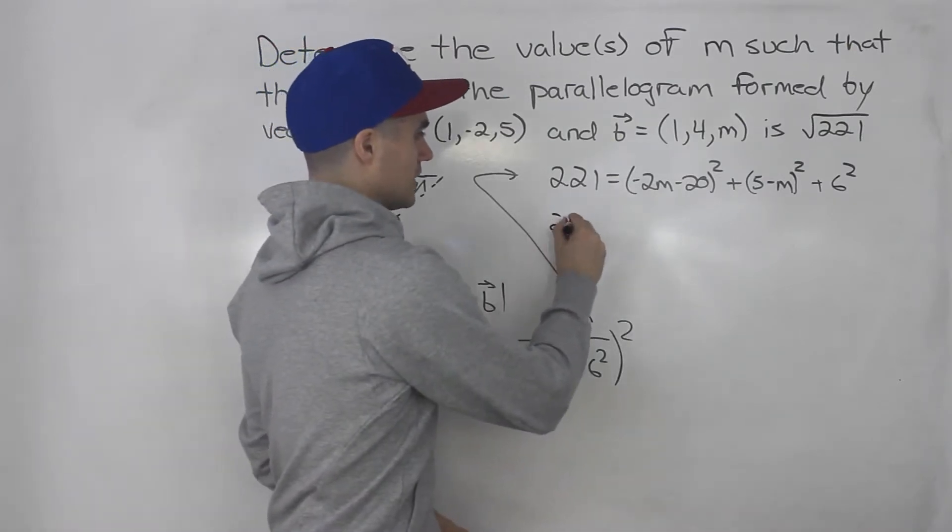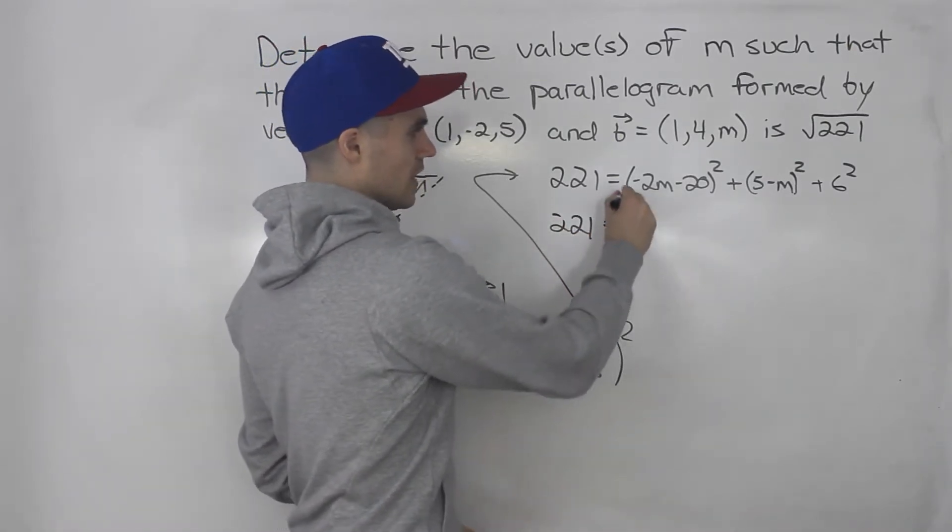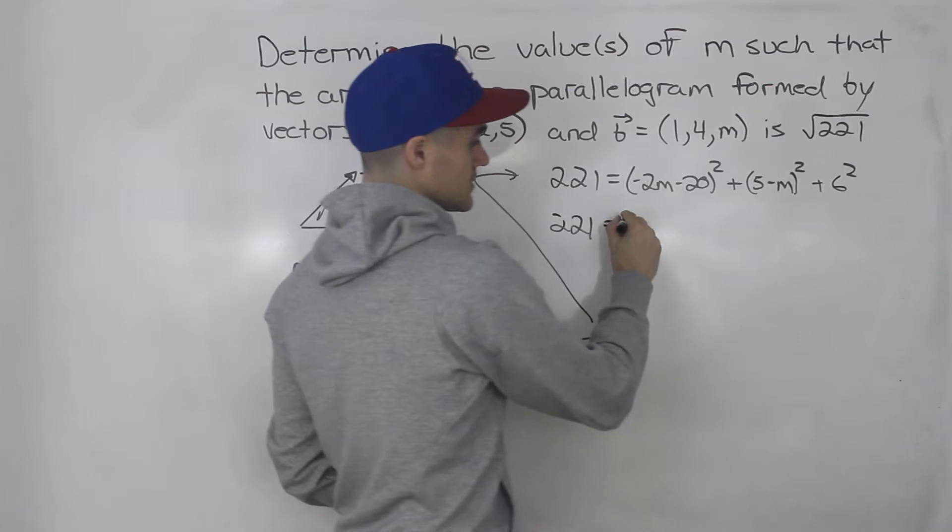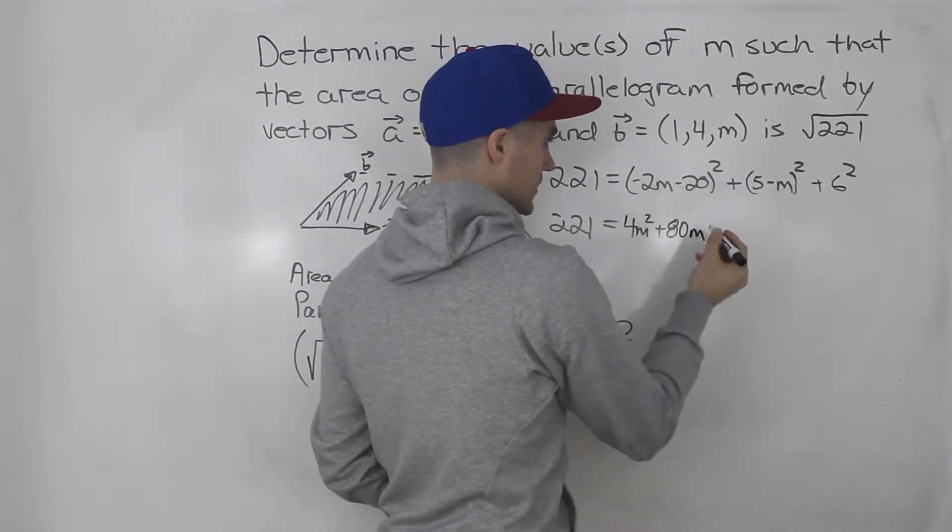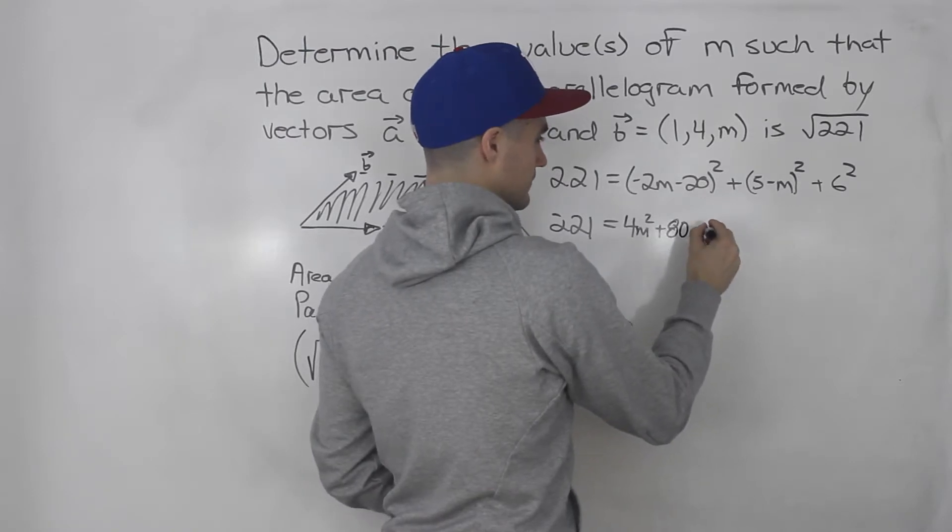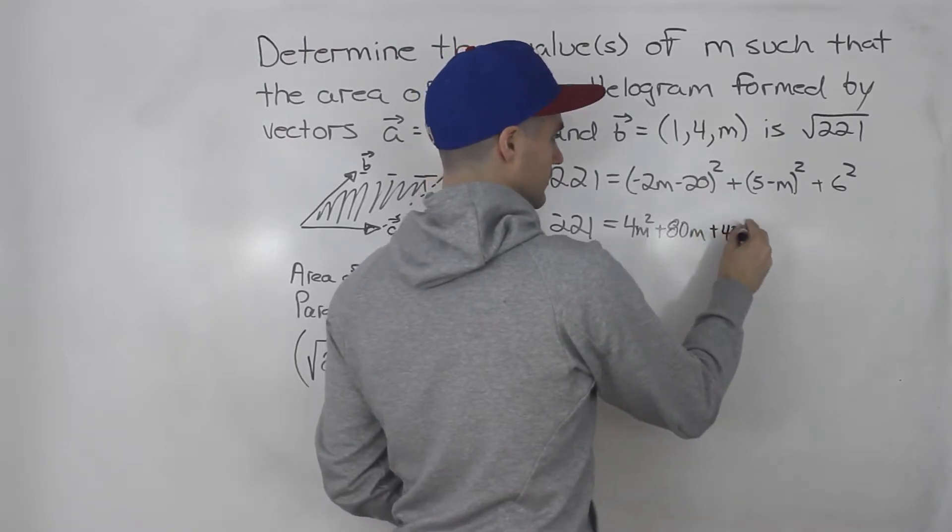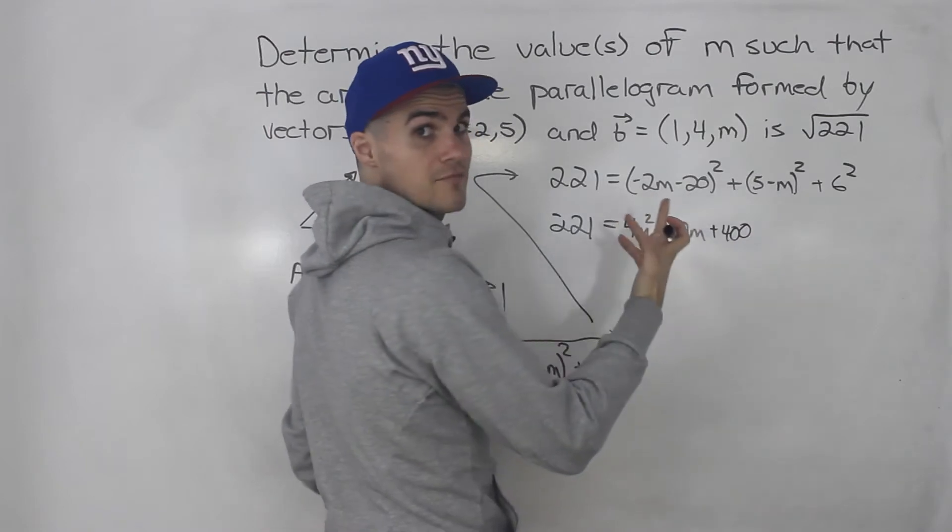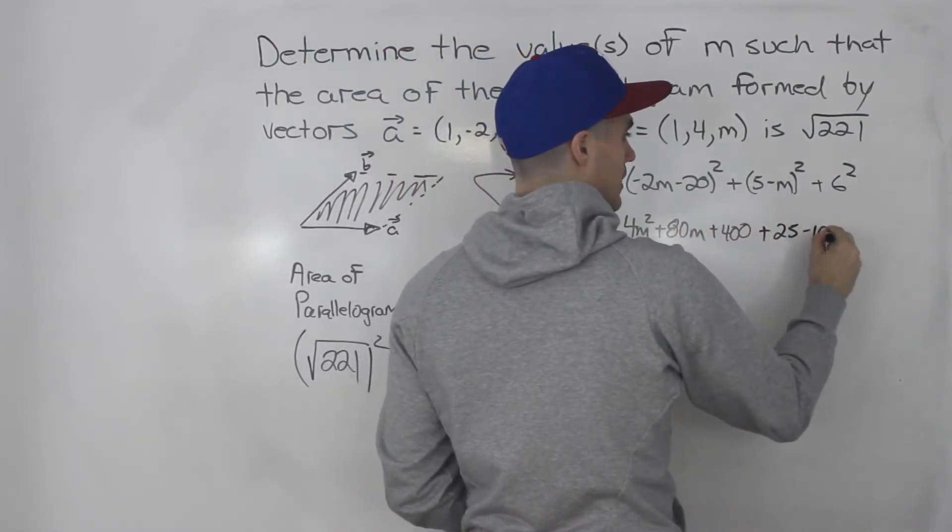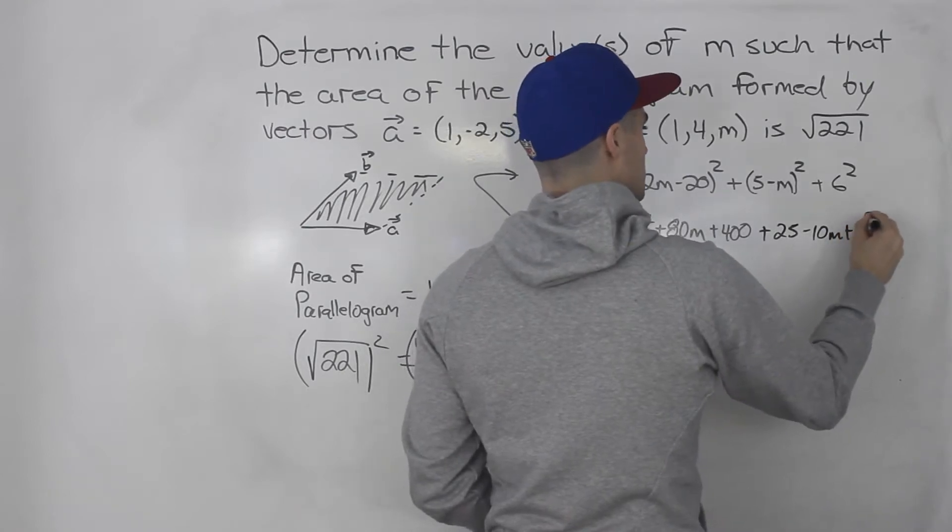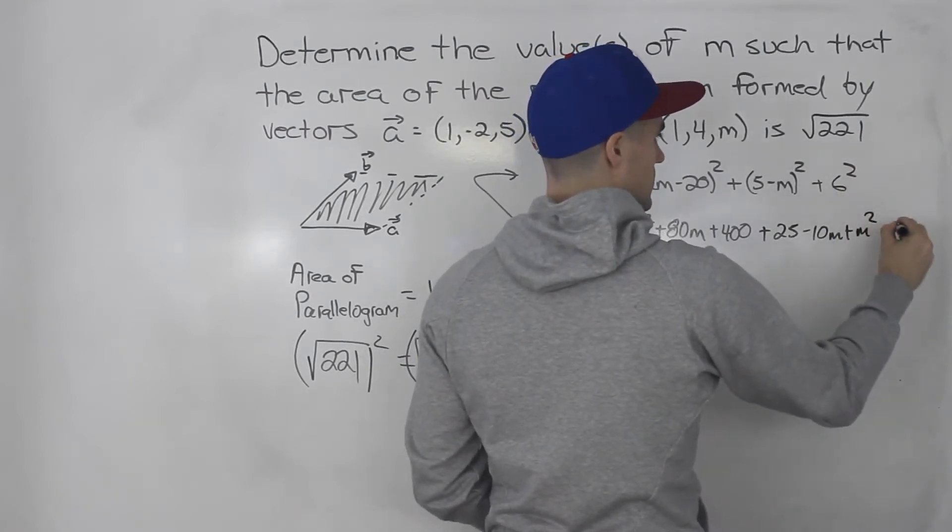Next step, 221 stays the same on the left side, and then we would FOIL this bracket out. So this would be 4m squared plus 80m, negative 20 times negative 20 is 400. Then we FOIL out this 5 minus m, so that would be 25 minus 10m plus m squared plus 6 squared is just 36.